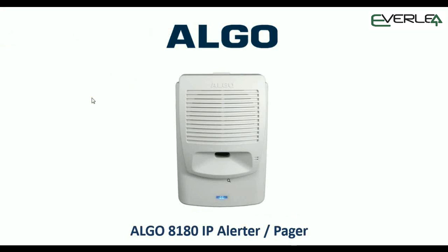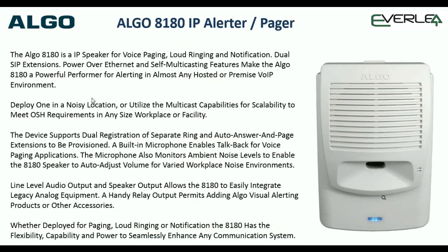Hi everybody, thanks for taking the time to watch this presentation. I'll be covering off the ALGO 8180 IP alerter and pager. The 8180 has a dual function - it has two SIP registrations: one we can use as an alerter and one for paging. Let's go through the alerting first.